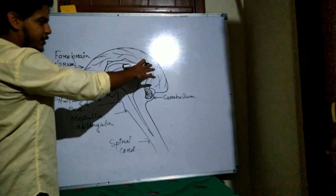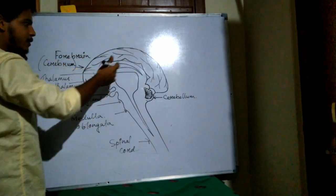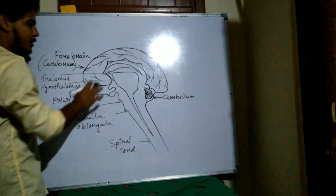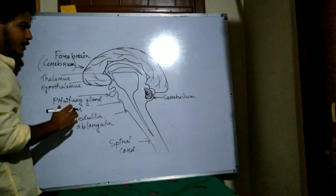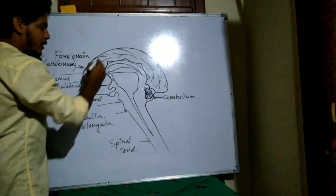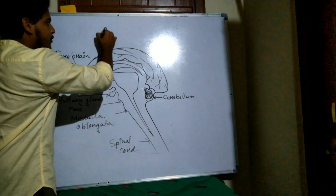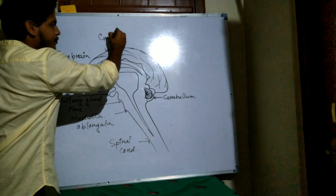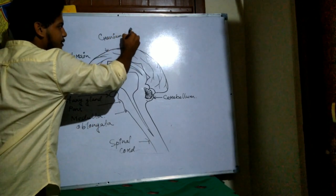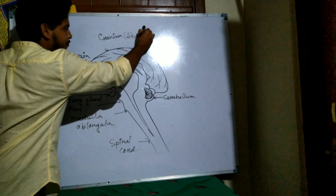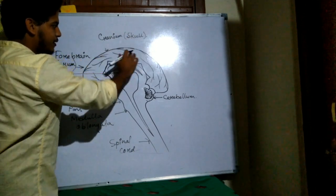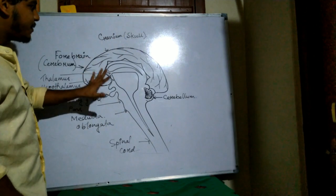And it is protected. The brain is protected under the, within the hard bone. As I have already said, it is protected within a hard bone and that bone is known as cranium. Cranium, cranium or skull. So it is just above this line. So these are the different parts of our brain.